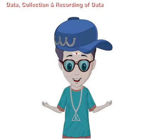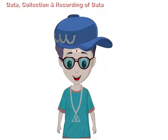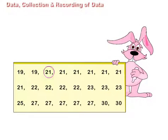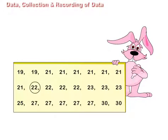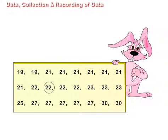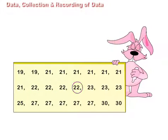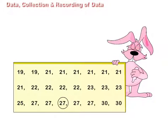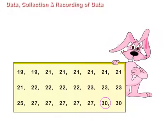Now he writes the above information in ascending order: 19, 19, 21, 21, 21, 21, 21, 21, 21, 22, 22, 22, 22, 23, 23, 23, 23, 25, 27, 27, 27, 27, 30, 30.